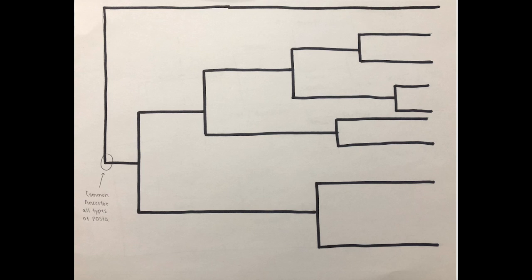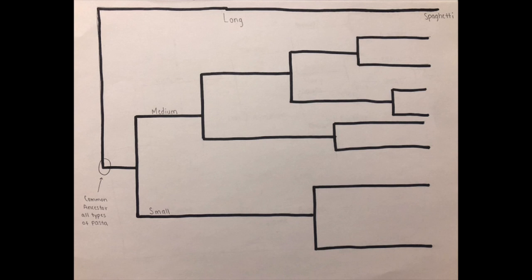With our phylogenetic tree, we are going to look at phenotypic traits of pasta to develop our phylogenetic tree. At our first node, we have our common ancestor for all types of pasta. From here, we see the divergence of our outgroup based on the phenotypic trait of long. We also see a divergence of two other groups with the traits medium-sized and small.